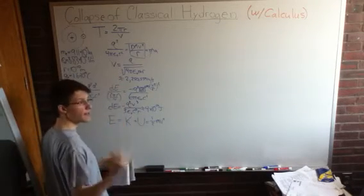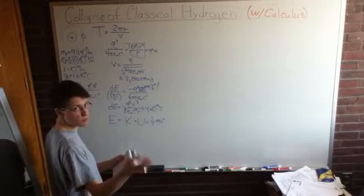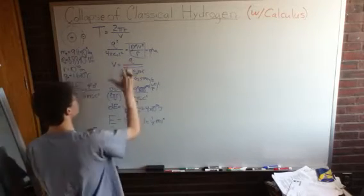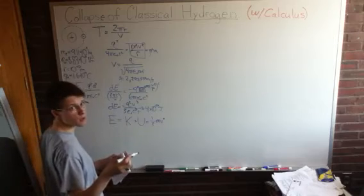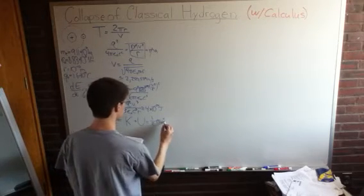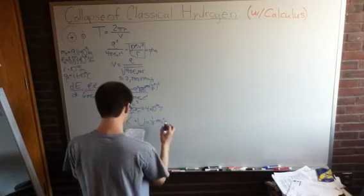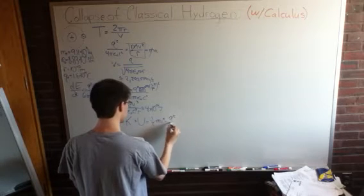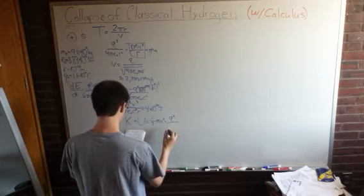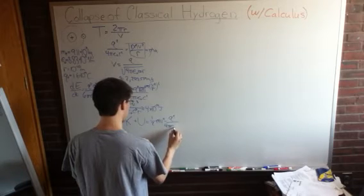So, force is the negative derivative of potential energy with respect to time. And we have the Coulomb force acting, so we're going to use the Coulomb potential as our potential energy. So, that is minus q squared divided by 4 pi epsilon naught r.